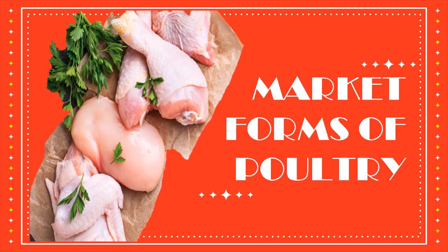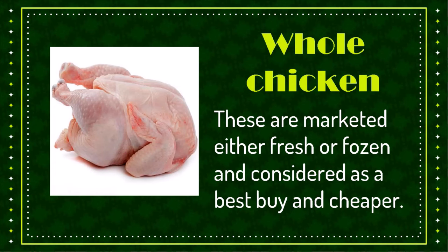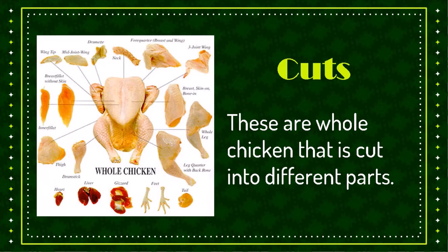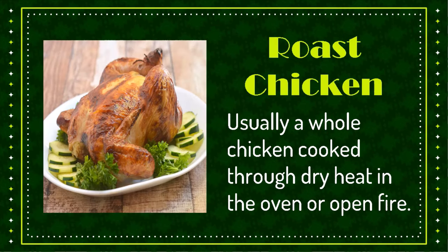Market forms of poultry. Chicken are sold in the market in different forms. Some people buy whole dressed chicken, while others prefer chicken in specialized cuts. Whole chicken are marketed either fresh or frozen and are considered a best buy and cheaper. Cuts are whole chicken cut into different parts. Roast chicken is usually a whole chicken cooked through dry heat in the oven or open fire.